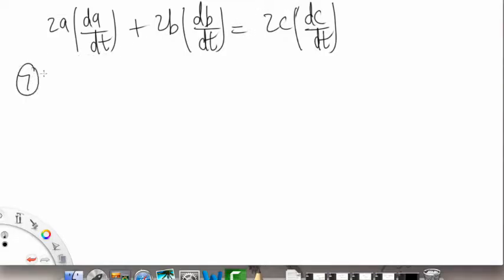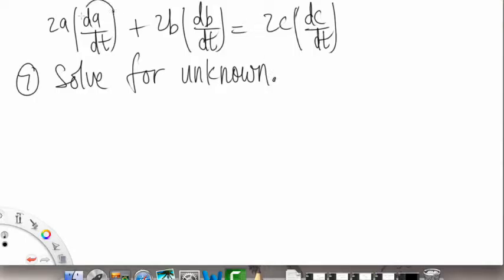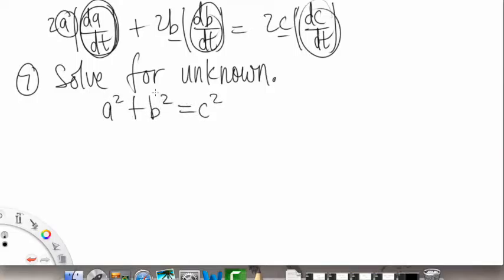All right, so now the next thing is to solve for the unknown. And our unknown, in this case our final unknown, is going to be dA/dt. But for now, we do know B, we know dB/dt, we know C, we know dC/dt, but we also don't know this A, right? So what we're going to do is go back to our original equation that related the variables. And we're going to, since we know B and C, we could solve for our A.